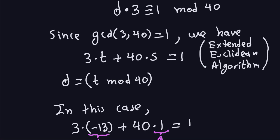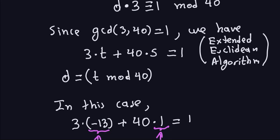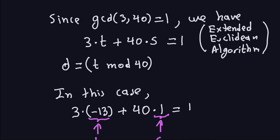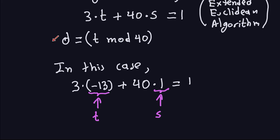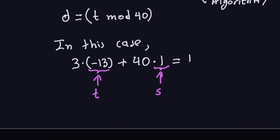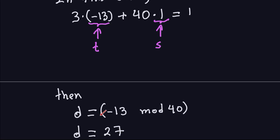Applying the extended Euclidean algorithm gives t = −13 and s = 1. The private key D comes from t, so D = −13 mod 40. This is why positive remainders are important — we want D to be a positive number.